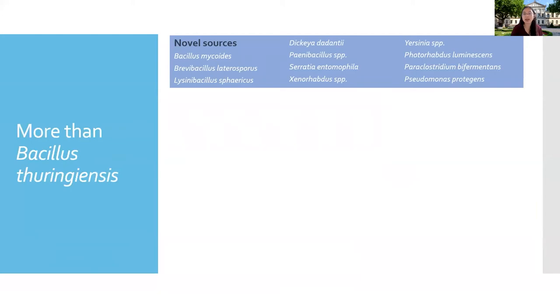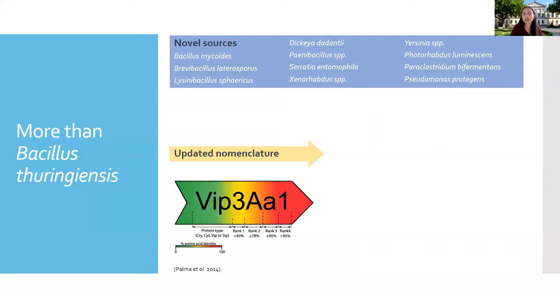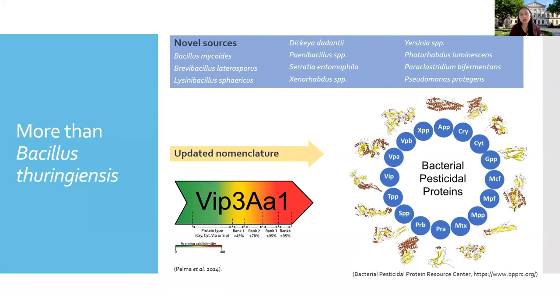Here is a list of some of them recognized by the Bacterial Pesticidal Protein Resource Centers as sources of pesticide proteins. This organization recently updated the nomenclature from a system based on amino acid sequence identity to a classification based on protein structure. This makes sense because proteins sharing sequence homology are likely to exhibit similar structure configurations, so this new system offers a better approach to identify and characterize functional domains.